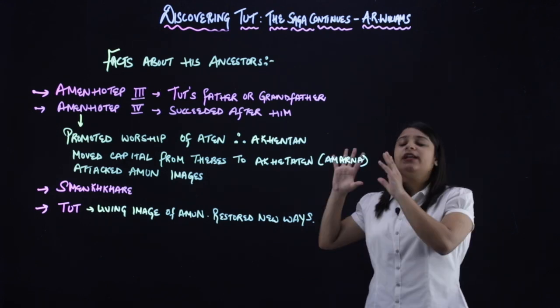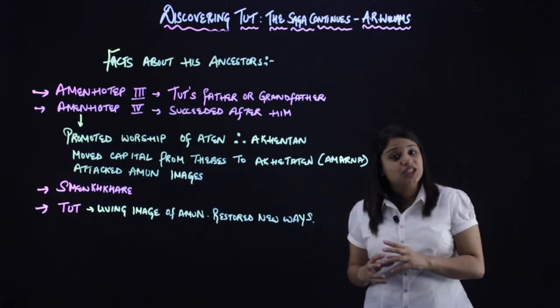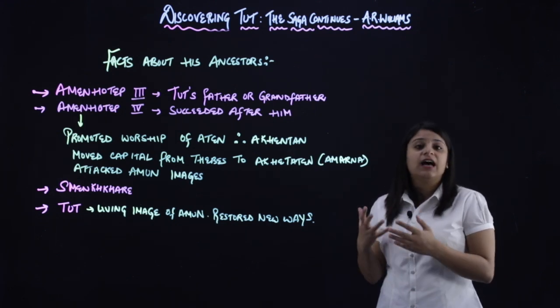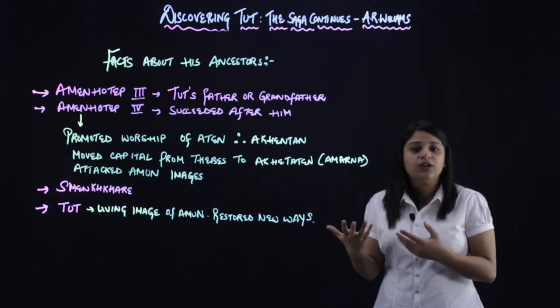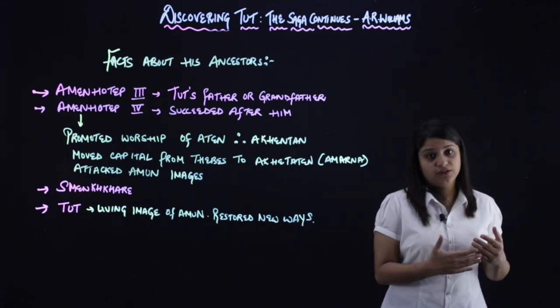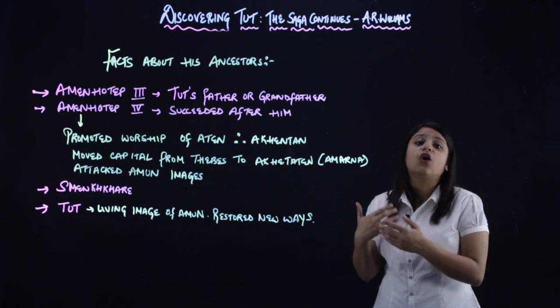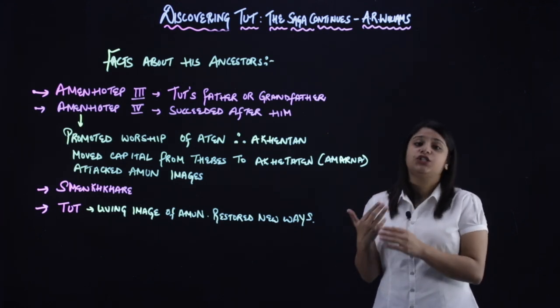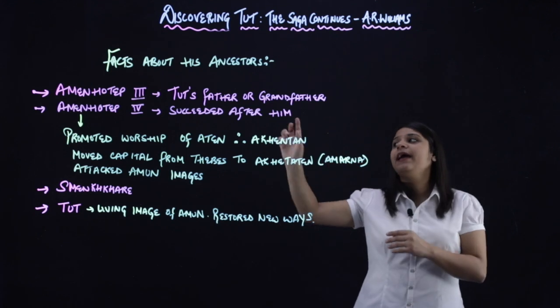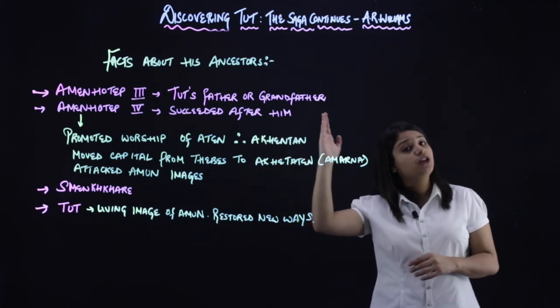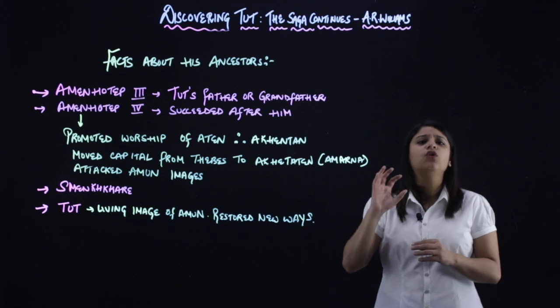Third thing he did was, he attacked Amun images and temples. That is, the old way of worship, of Amun, Amun meaning the worship of sun and air, of that Egyptian god's worship. So he destroyed their ideals, their images, their temples. So this was done by Amenhotep IV, who was the successor of Amenhotep III. So these three things you need to remember.